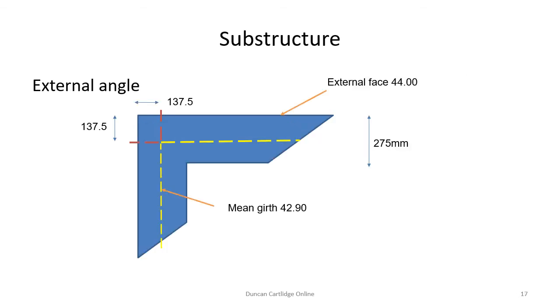Centre lines are calculated on the basis of the number of external angles. This slide shows one external angle from the previous slide. When using the external dimension, for each external angle, it is necessary to deduct half the thickness of the wall from both the length and the width. And then multiply this by the number of external angles, which in this case is 4.